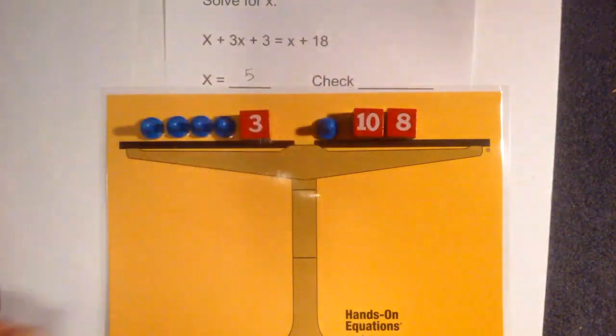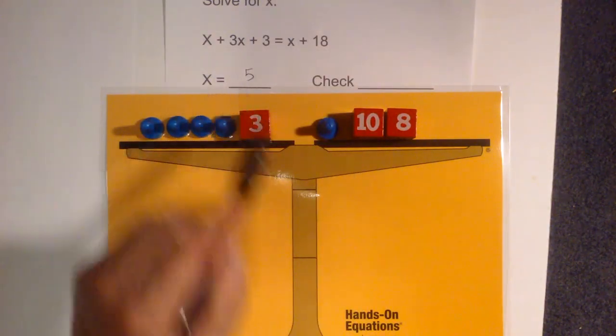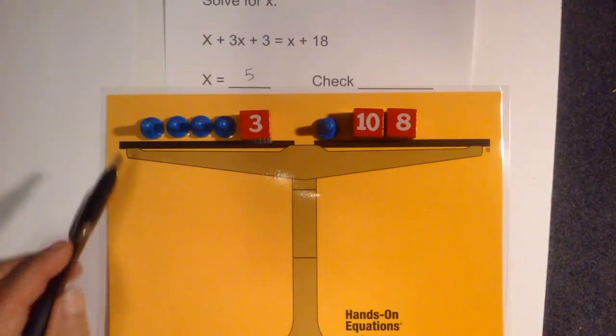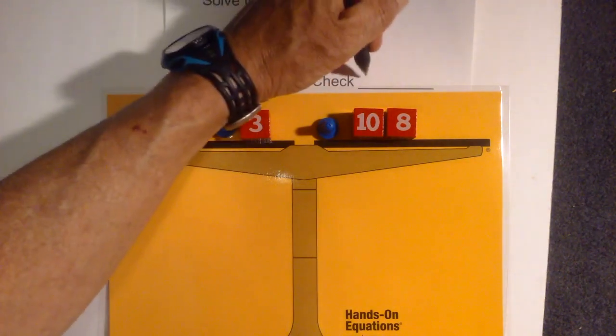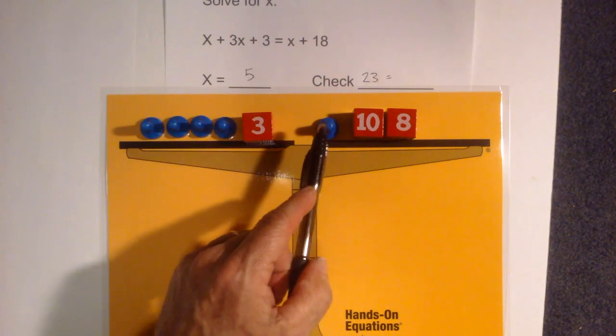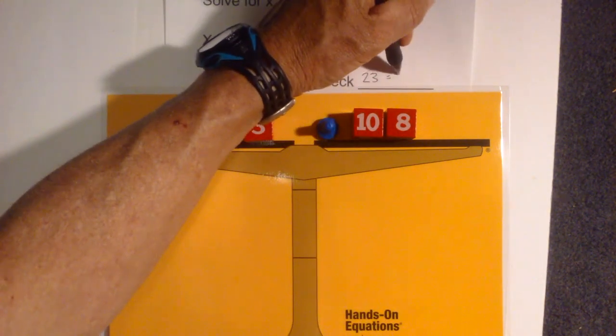Now what I do is remember it's a balanced equation. I need to plug 5 in and make sure that both sides are equal or they're of equal weight. So I have 5, 10, 15, 20, 23 equals, and now we have 5 plus 10 is 15, 15 plus 8 is 23. So check.